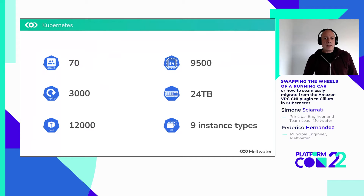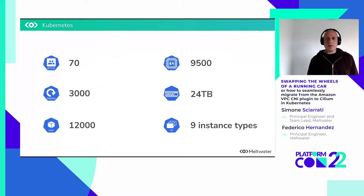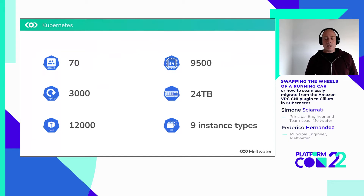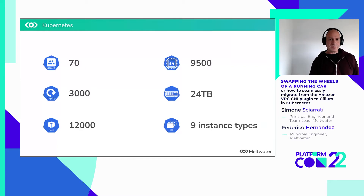Our main production cluster is used by about 70 teams. We run over 3,000 applications, summing up to more than 12,000 pods. Overall, the cluster provides 9,500 cores, 24 terabytes of memory, and 9 different EC2 instance types to allocate for different workloads.